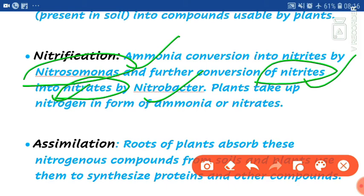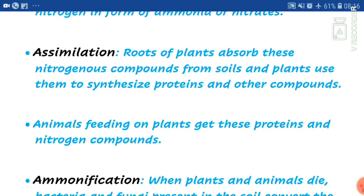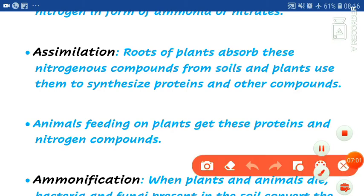Plants take up nitrogen in the form of ammonia or nitrate — that is, the plant absorbs these in the form of ammonia, nitrate, or nitrite. Next is assimilation: the roots of plants absorb these nitrogenous compounds from the soil, and the plant uses them to synthesize proteins and other compounds. The plant body absorbs these products, and whatever nitrogenous compounds are present, the plant builds them — for example, protein.